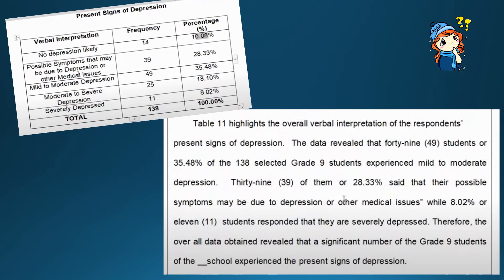Present Sign of Depression. Table 11 highlights the overall verbal interpretation of the respondents' present signs of depression. The data revealed that 49 students or 35.48% of the 138 selected Grade 9 students experience mild to moderate depression.